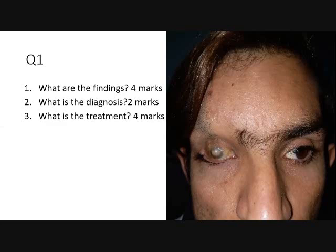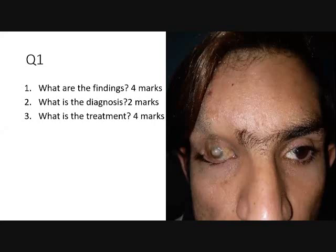This corneal opacity can also be due to trauma or Peters anomaly. For treatment, we will do lid reconstruction and we can go for keratoplasty. The prognosis is poor — you cannot restore the vision, so it is all cosmetic.